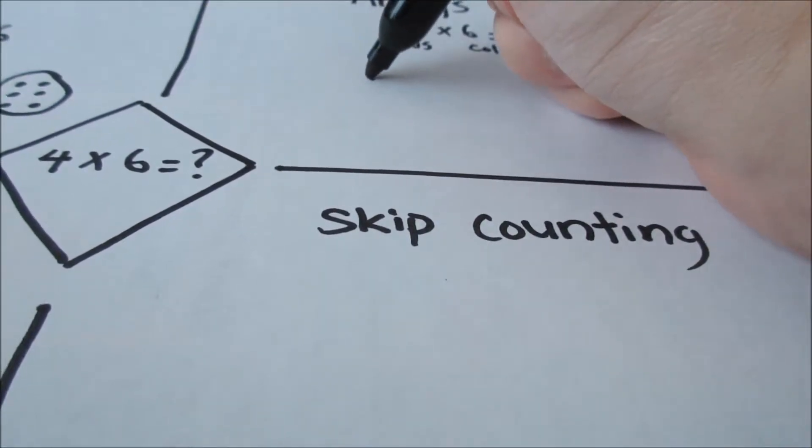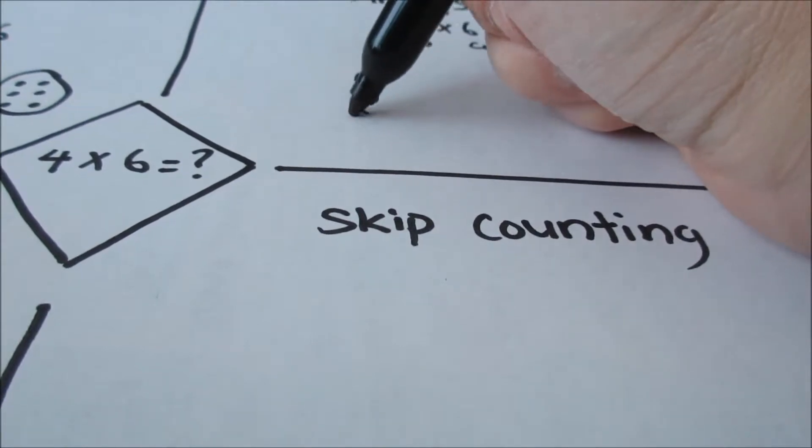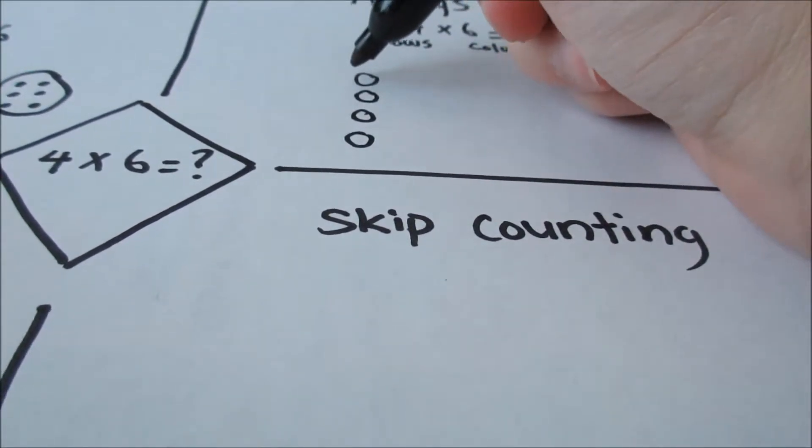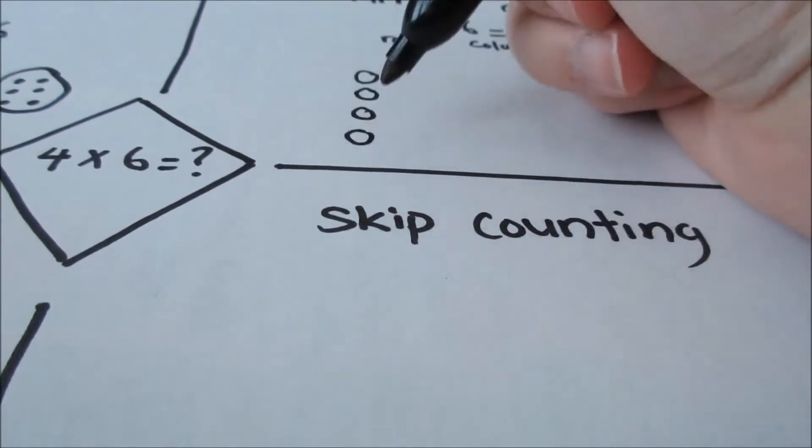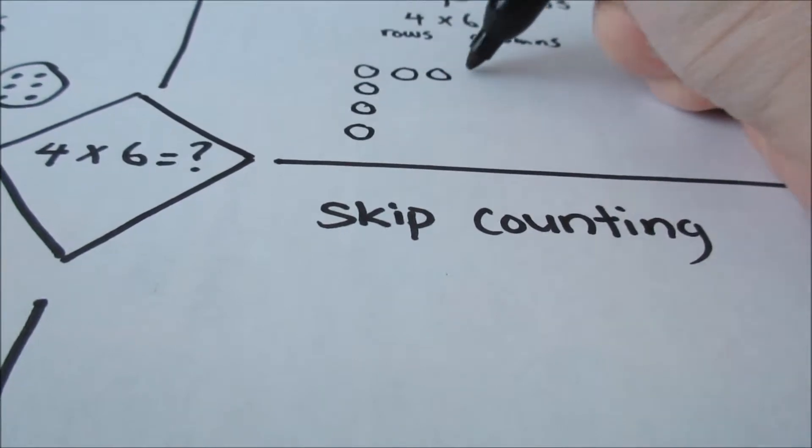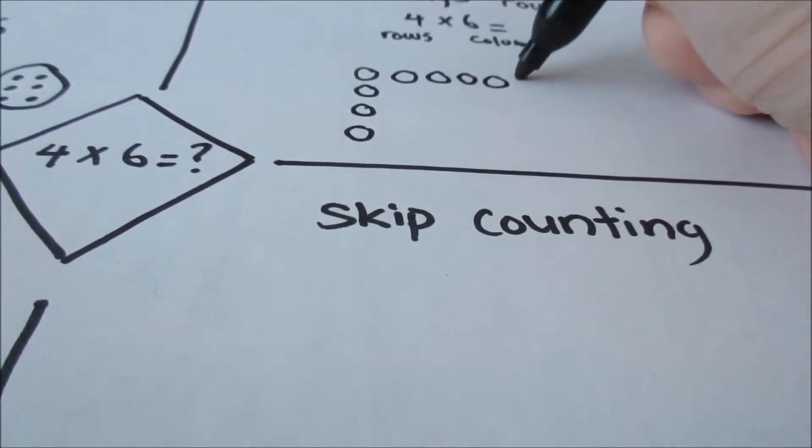First, I'm going to draw 4 rows. You can see 1 row, 2 rows, 3 rows, 4 rows, and then 6 columns. 3, 4, 5, 6 columns.